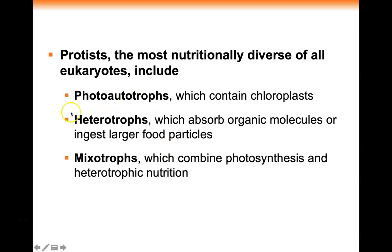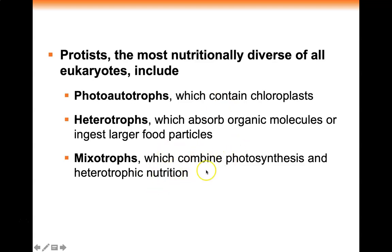There's a third category called mixotrophs — protists that can do both photosynthesis and heterotrophic nutrition. In the right conditions with a lot of light, these organisms do photosynthesis; if light is blocked, they can switch to heterotrophic nutrition consuming organic matter. So protists can be phototrophs, heterotrophs, or mixotrophs that do both photosynthesis and heterotrophy.